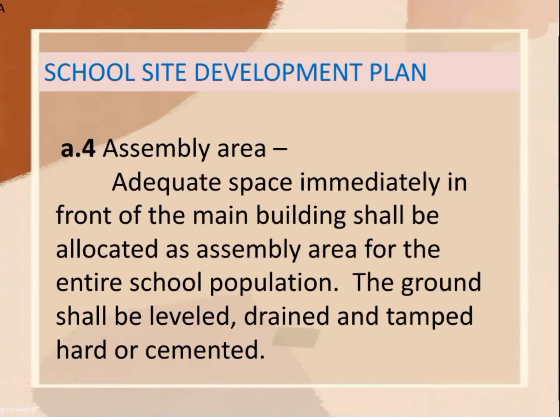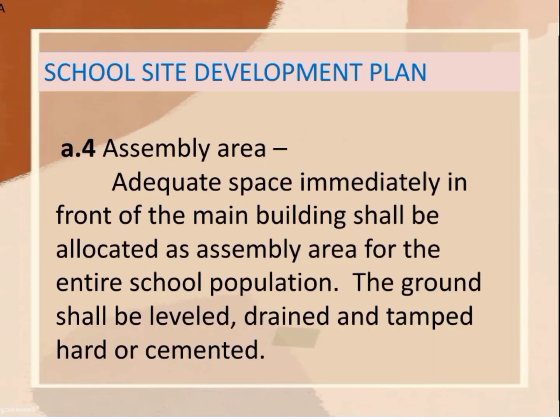Another is the assembly area. Adequate space immediately in front of the main building shall be allocated as an assembly area for the entire school population. It is where the whole school population assembles for flag ceremonies, school convocations or programs, and others. The ground shall be leveled, drained, and damped hard or cemented.